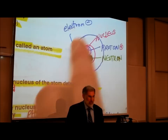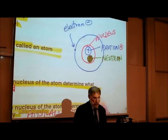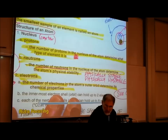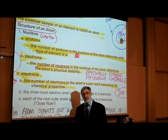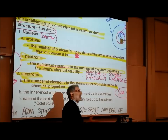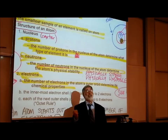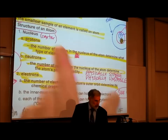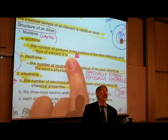Every atom has one or more protons in the nucleus. The number of protons in the nucleus of the atom is what determines what type of element it is. Atoms that have one proton in their nucleus are called hydrogen atoms, atoms with two protons are called helium atoms, and atoms with 92 protons are called uranium atoms.